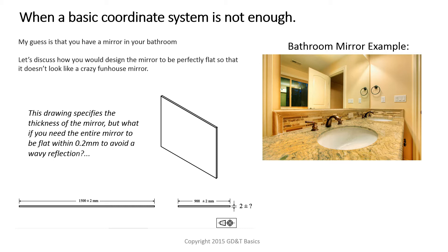The drawing specifies the thickness of the mirror. However, what do we use for the thickness tolerance? Let's say that the mirror needs to be flat within 0.2 millimeters to avoid a wavy reflection. You've done some tests and you've realized that if it's over 0.2 millimeters, we see some sort of waviness all over it, but under 0.2 millimeters, it looks pretty flat. So how do you provide this design intent on the drawing?